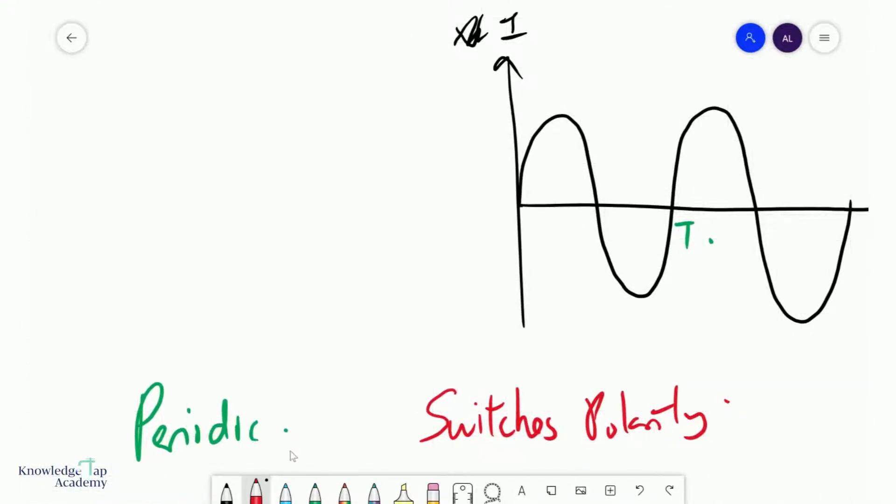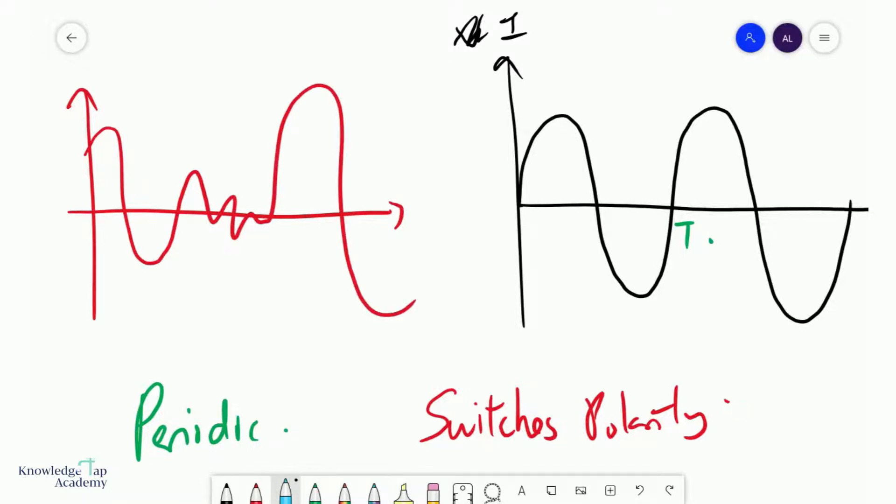For example, if I gave you another negative example, something like that, which switches polarity, but it does all kinds of funny things. I can't really identify any fixed, repeated pattern here. So, there's no defined period. So, this is not considered an alternating source as well.